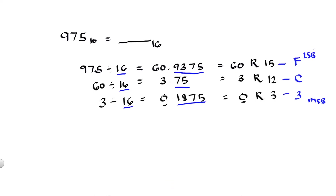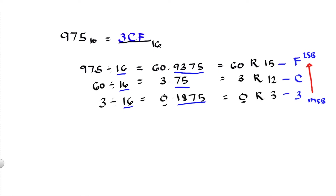Again, this is our MSB and this is our LSB. We read the answer from the most significant bit to the least significant bit, or from bottom to top. So the hex equivalent of 975 decimal is 3CF in base 16. For our third example, we can also convert decimal to hex using the long division method.